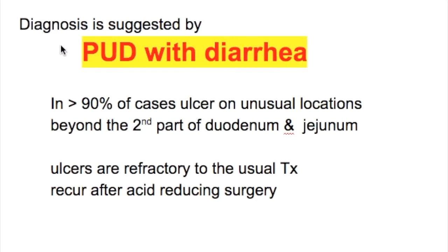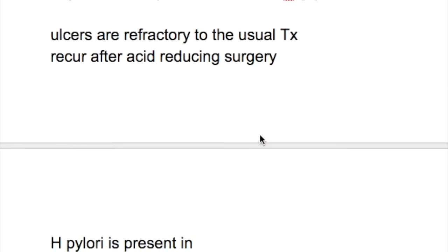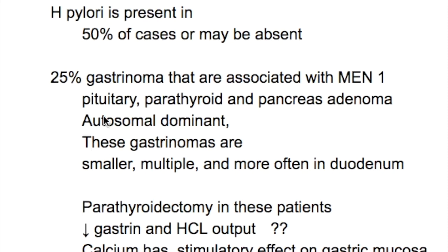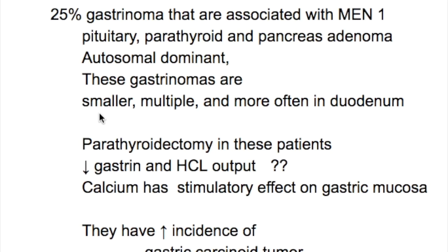Diagnosis is suggested by peptic ulcer disease with diarrhea. In 90% of cases, the ulcer is on an unusual location beyond the second part of the duodenum and jejunum. Ulcers are refractory to usual treatment and recur after surgery. H. pylori are present in only 50% of cases or may be absent. The 25% of gastrinomas associated with MEN type 1 — involving pituitary, parathyroid, and pancreatic adenomas — are autosomal dominant; these gastrinomas are smaller, multiple, and more often located in the duodenum.